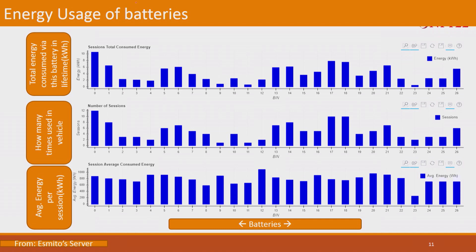Moving forward on energy usage of batteries, there are a number of things we can keep doing. One example is the total energy consumed by any given battery during its lifetime. On the x-axis, these are the battery bin numbers, and the y-axis shows energy. Throughout its life, how much energy has been used by each battery pack, and how would that help us figure out the number of cycles it would work for.